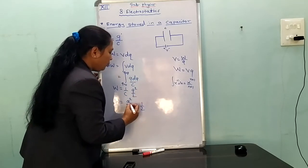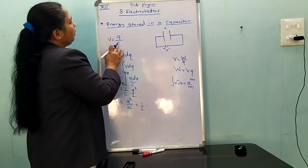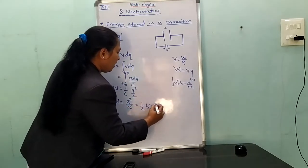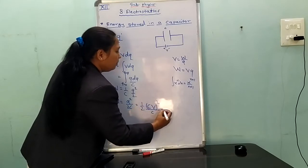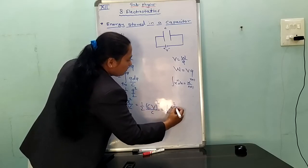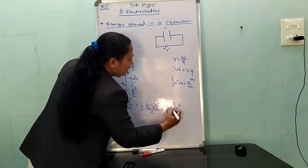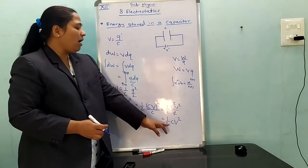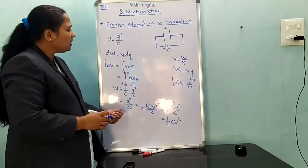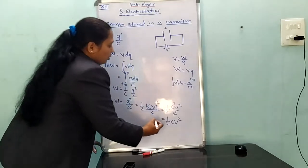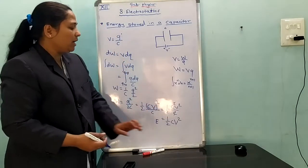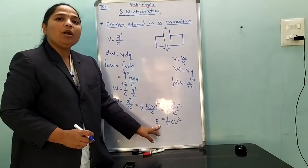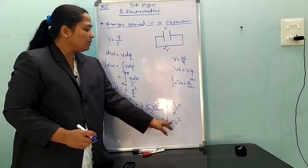Now substituting Q equal to C into V, we get: W is equal to half times (CV) squared upon C, which gives half C squared V squared upon C. The C terms cancel, so W is equal to half C V squared. Work stored in the form of energy is E is equal to half C V squared, where C is the capacitance and V is the potential difference.